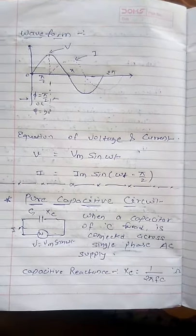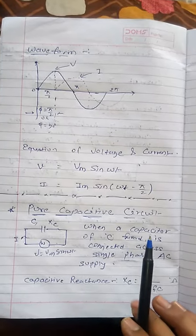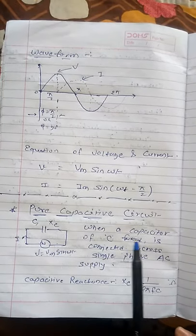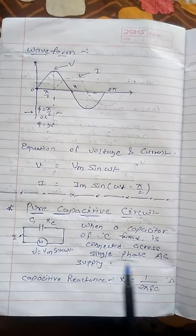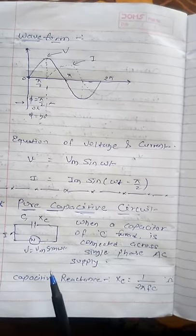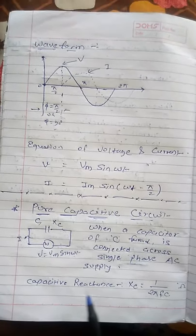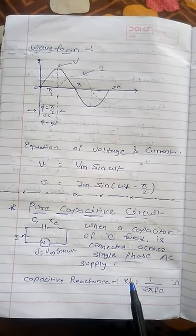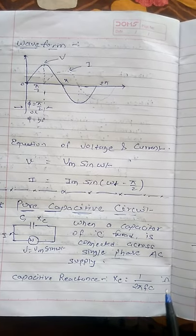Next is the pure capacitive circuit. When a capacitor of C Farads is connected across a single phase AC supply, we have capacitive reactance. XC is equal to 1 divided by 2πFC, and its unit is ohm.